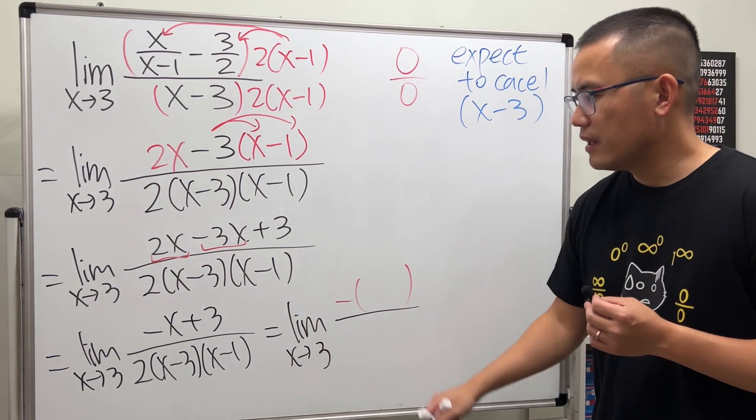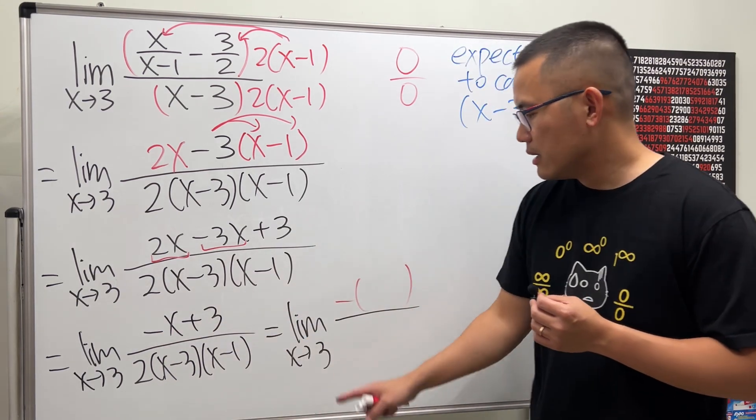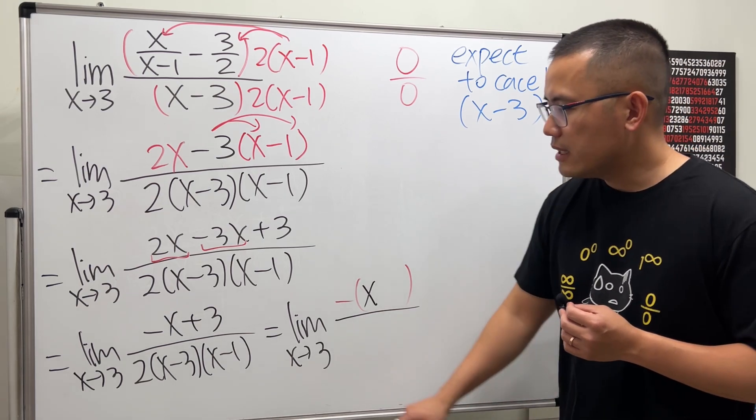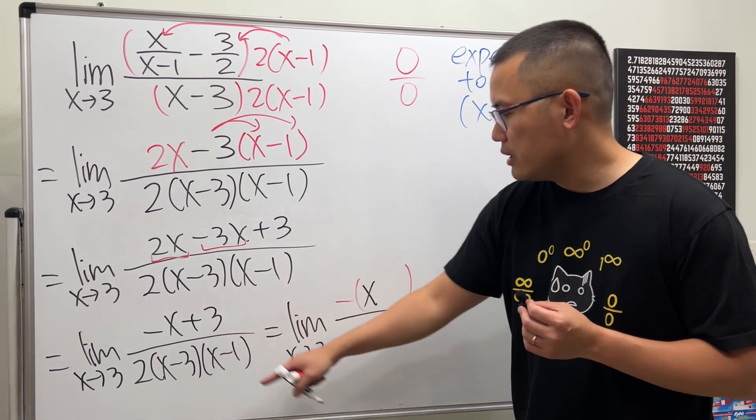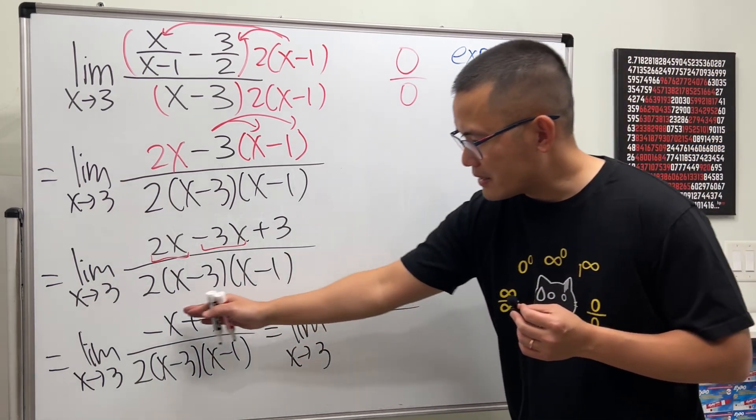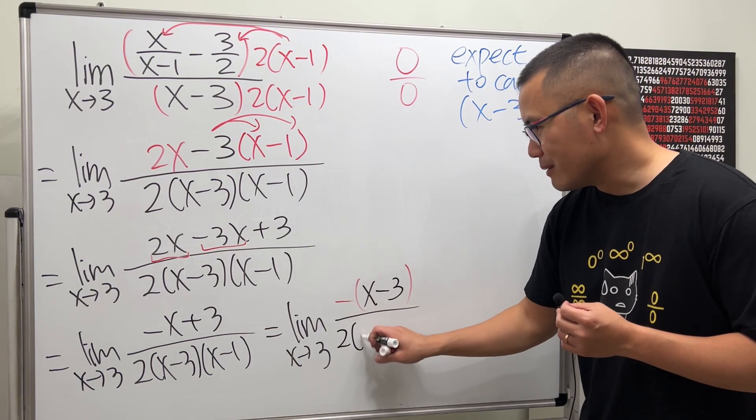Factoring out a negative, and then you see originally we have negative x. Factor out a negative, we will have positive x inside, and then just take positive 3 divided by like negative 1, we will have negative 3 inside. Factoring out a negative and we get this, and then we will have the bottom.